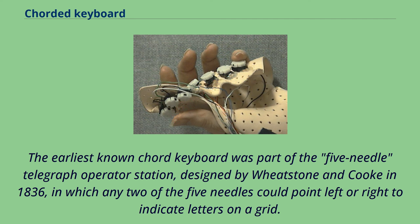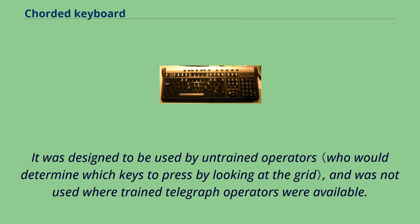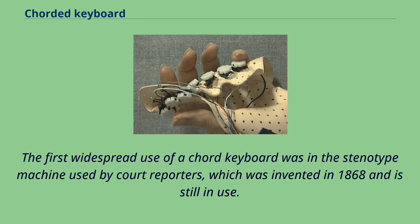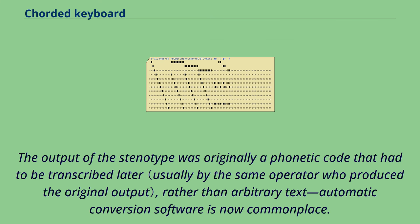The earliest known chord keyboard was part of the five-needle telegraph operator station, designed by Wheatstone and Cook in 1836, in which any two of the five needles could point left or right to indicate letters on a grid. It was designed to be used by untrained operators and was not used where trained telegraph operators were available. The first widespread use of a chord keyboard was in the Stenotype machine used by court reporters, invented in 1868 and still in use. The output of the Stenotype was originally a phonetic code that had to be transcribed later; automatic conversion software is now commonplace.